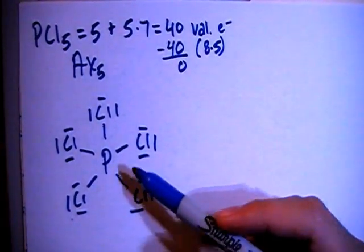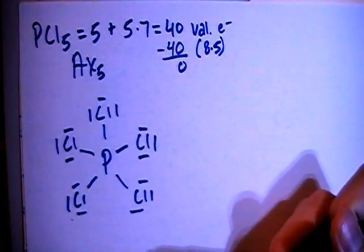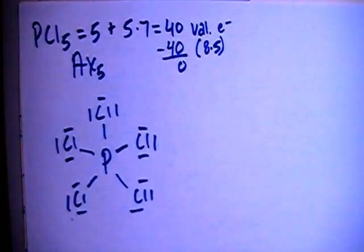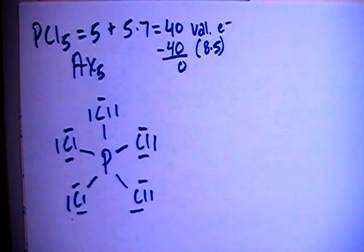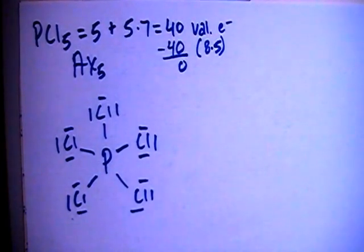Notice that phosphorus can have more than 8 electrons because it's in the third period, meaning it has access to the d shell, so it can hold more than 8. The octet rule is not the only rule that applies here.